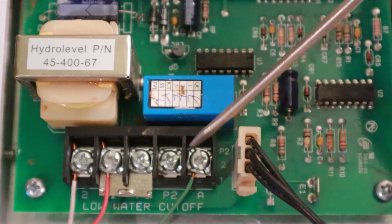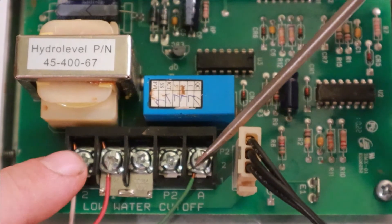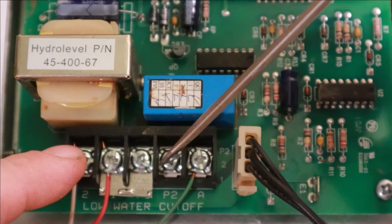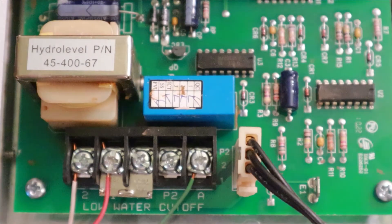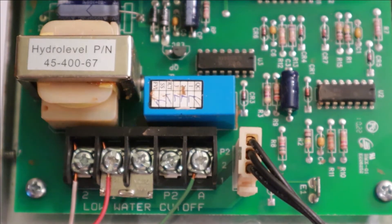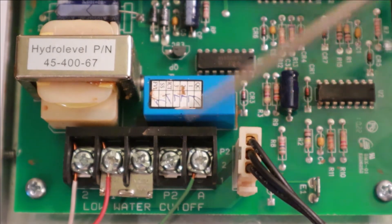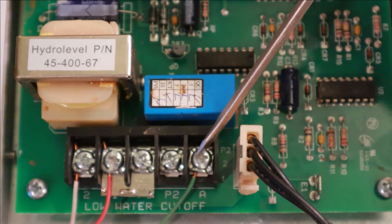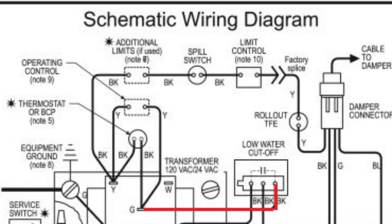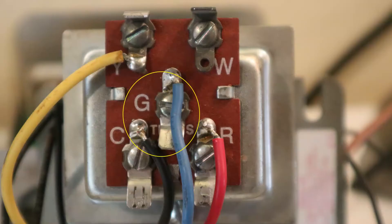So in a low water condition, the A terminal and your common, you'll have your 24 volts between P2 and common, you won't have power there. So once the water condition is met, there's a 30 second delay so that we can get the water level up above the actual probe that's in the boiler. And then that power will cut off on the A terminal and it'll be restored on P2. And from P2, it goes back to the G terminal on our transformer.